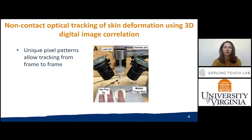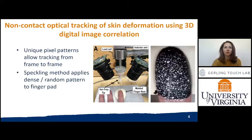Using a non-contact optical tracking method called digital image correlation, we quantify the differences in skin deformation at perceptual thresholds. Using stereo camera calibration and unique patterns applied to the skin, we can obtain specific 3D displacement from 2D images.